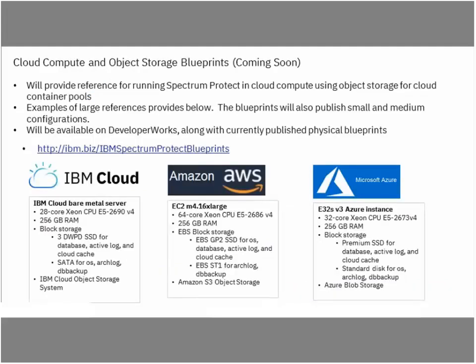The cloud blueprints — we're currently in the midst of validating a set of white papers. The first two, focusing on Amazon AWS and Microsoft Azure, are slated to be available by the end of this month. We're looking to post those to developerWorks along with the object storage benchmarking tool. These documents will convey recommended environments, vendor-specific best practices, and guidance on creating small, medium, and large systems — as well as some of our benchmarking experience — to provide a starting point for building cloud-based Spectrum Protect servers.